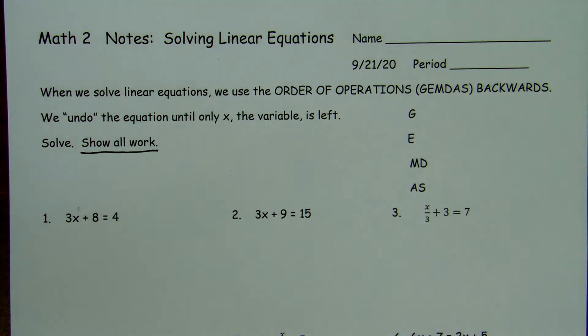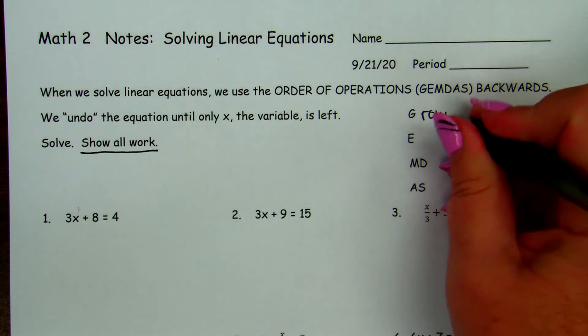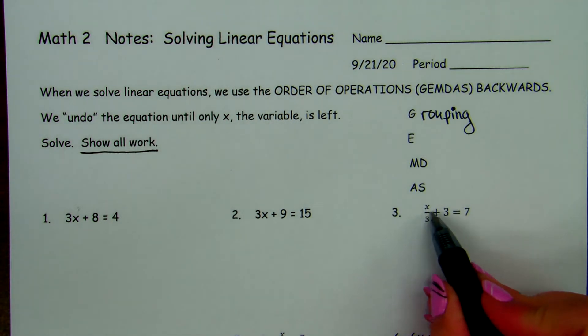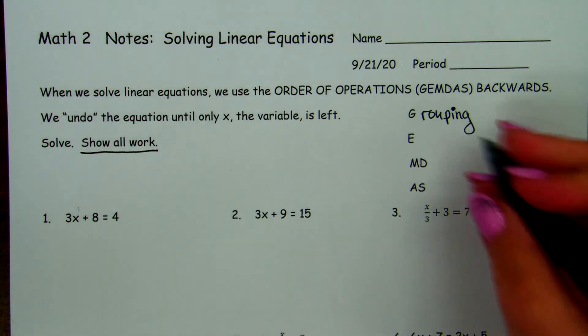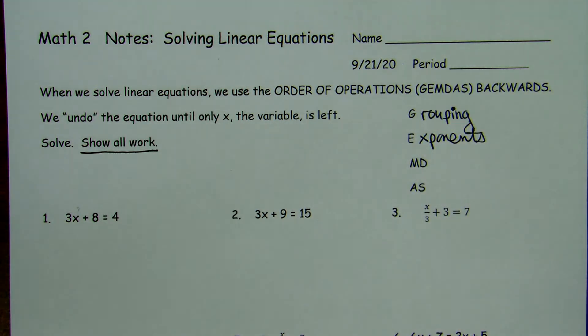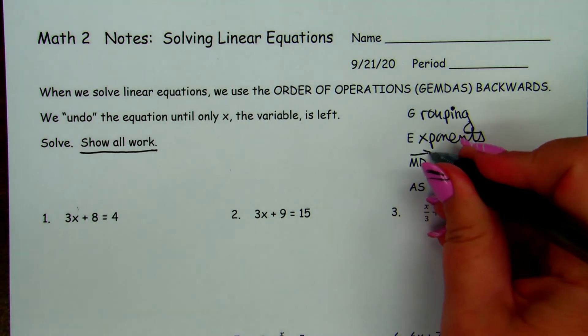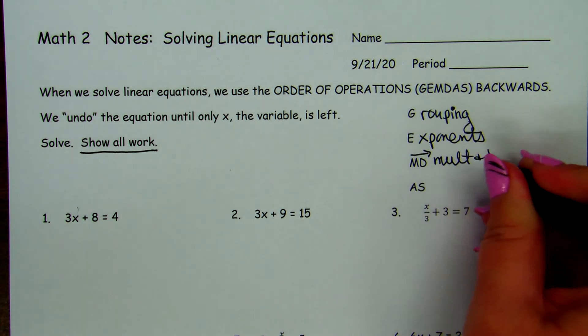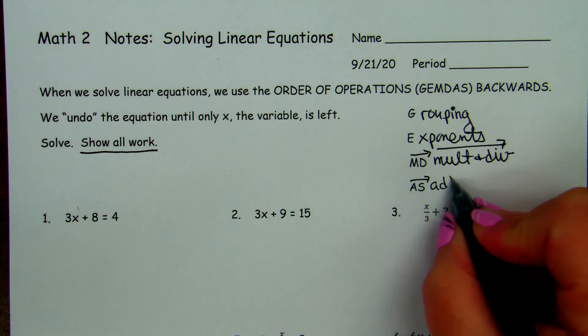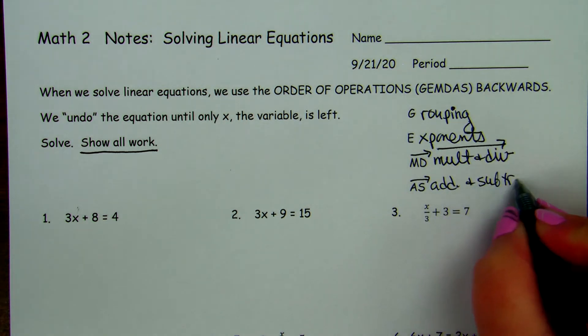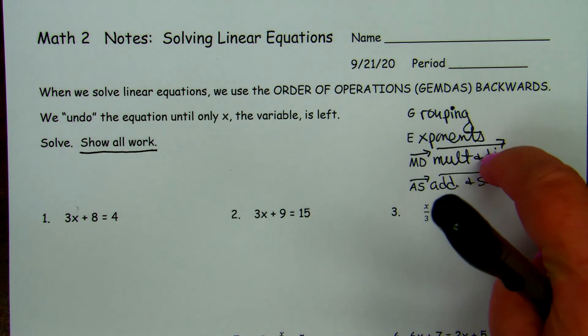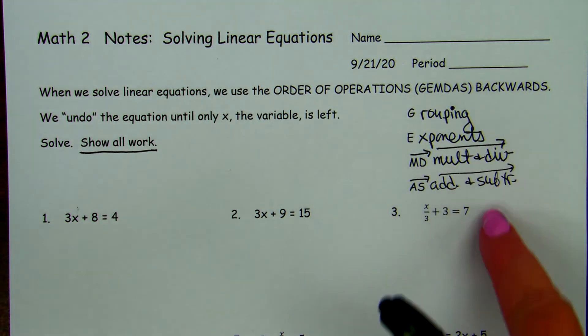But let's review the order of operations. G stands for grouping, and grouping symbols include parentheses, division symbols. E stands for exponents, and none of these have exponents right now. M and D stand for multiplication and division, left to right. And A and S stand for addition and subtraction from left to right. So in these problems, instead of doing the multiplication and division first, we're going to do addition and subtraction first, and then work our way up.